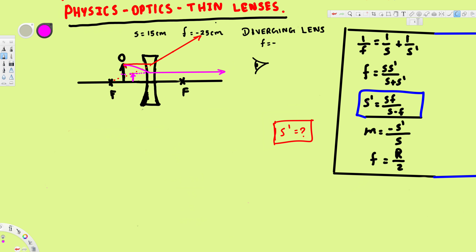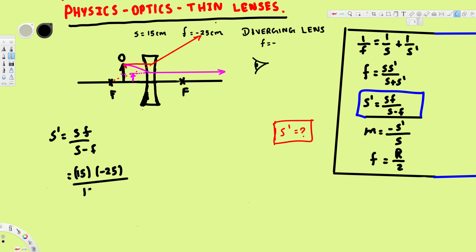To find the image distance mathematically, we use the equation: s-prime equals s times f over s minus f. Here s is the object distance, f is the focal length, and s-prime is the image distance. Plugging in the values: s is 15 centimeters and the focal length is negative 25 centimeters, so we multiply 15 by negative 25 in the numerator, and the denominator is 15 minus negative 25.